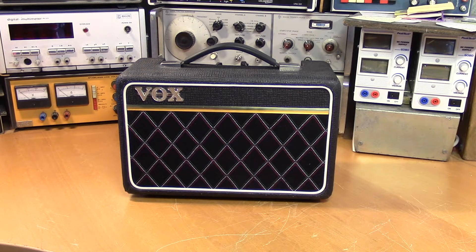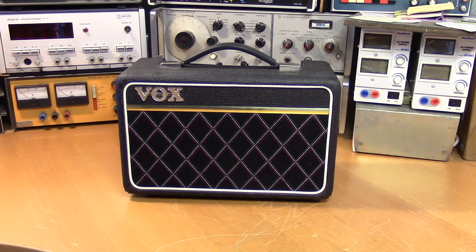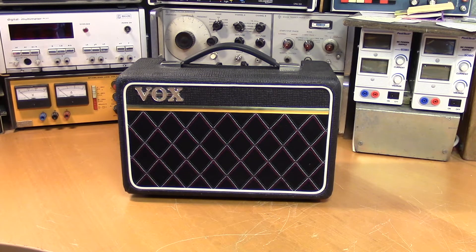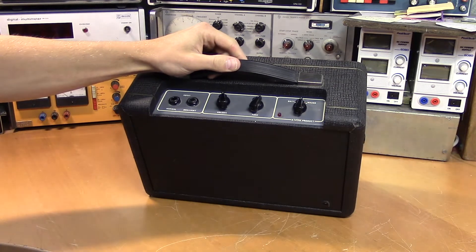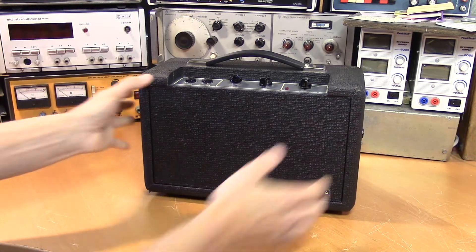The Escort B2 was introduced in 1974 and designed to be a small, portable, battery-powered amplifier. It doesn't seem to turn on, so I'm guessing there's no battery in it right now. Let's have a look inside.